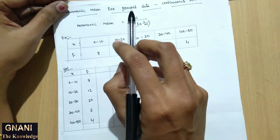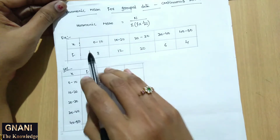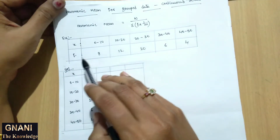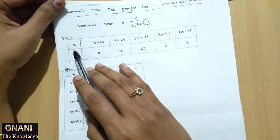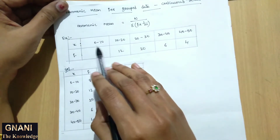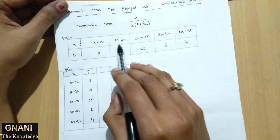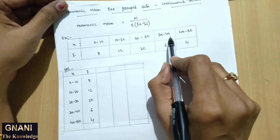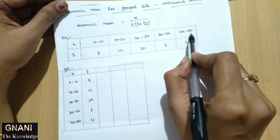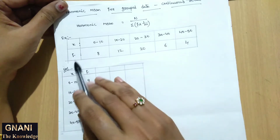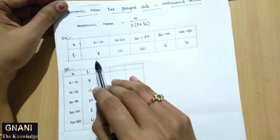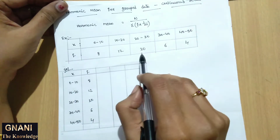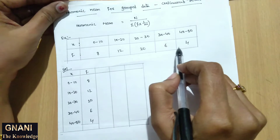Here the continuous data class intervals are: x equal to 0 to 10, 10 to 20, 20 to 30, 30 to 40, and 40 to 50. And the frequency values are 8, 12, 20, 6, and 4.